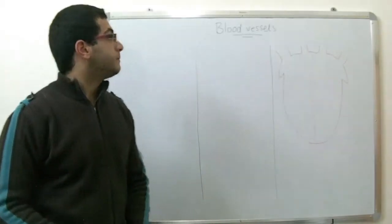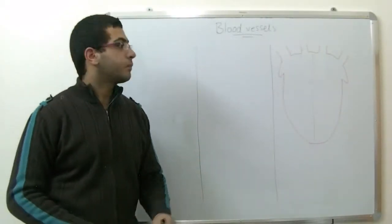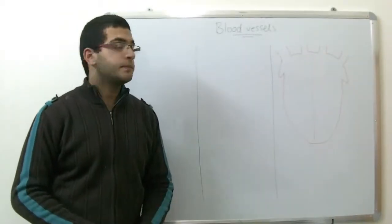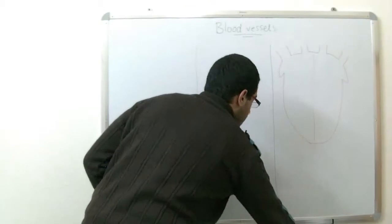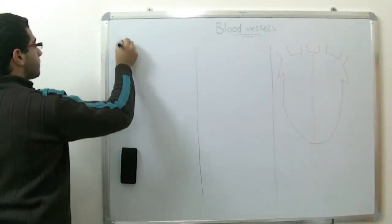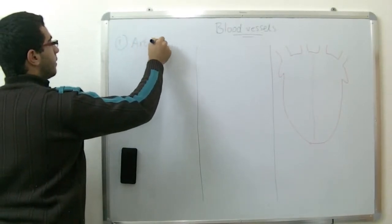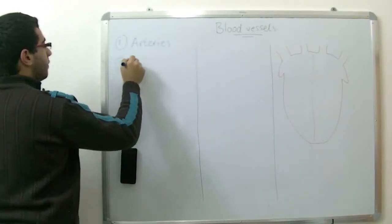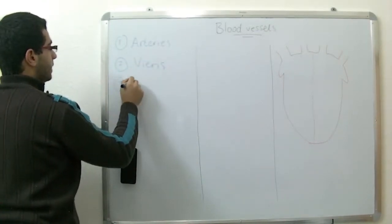Hello everybody and welcome back. Today we will talk about the blood vessels. As the last time we talked about the structure of the heart, the blood vessels are divided into arteries, veins, and blood capillaries.